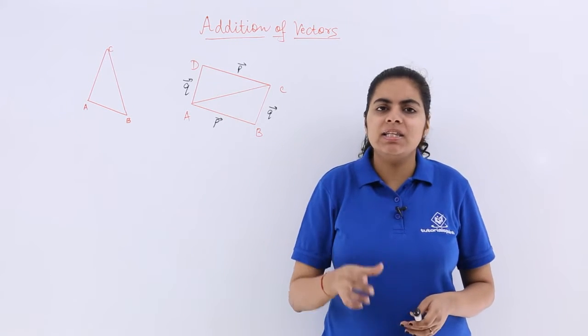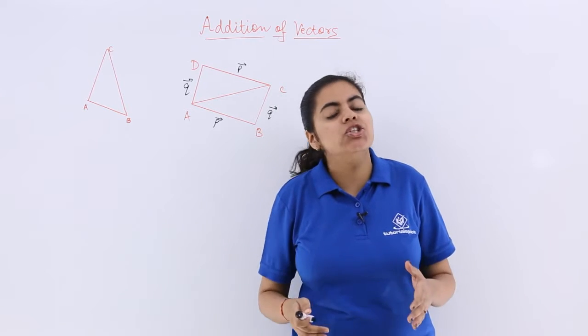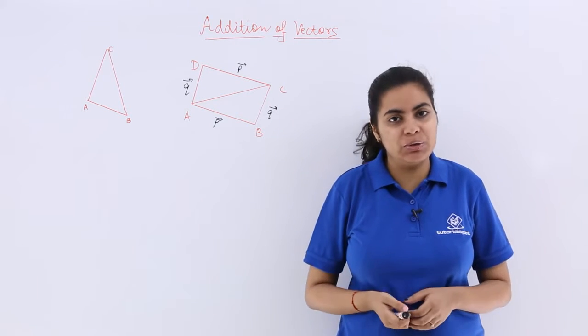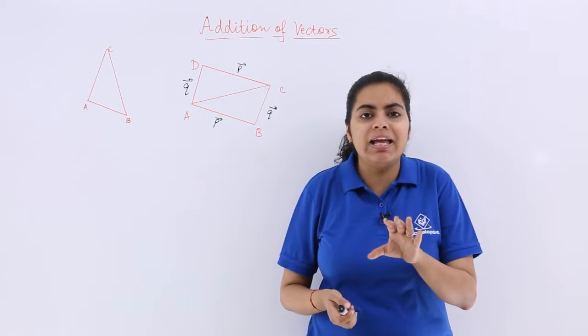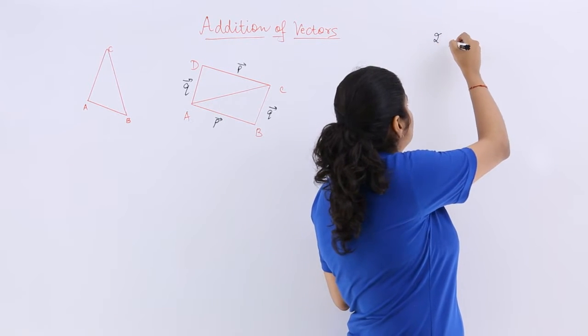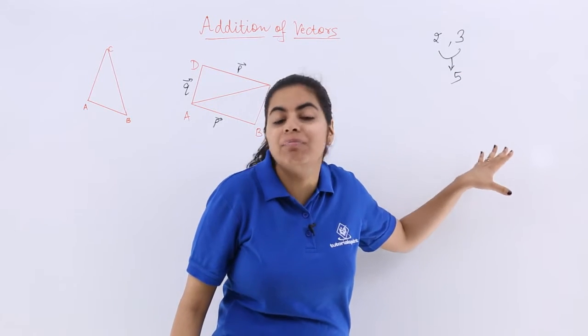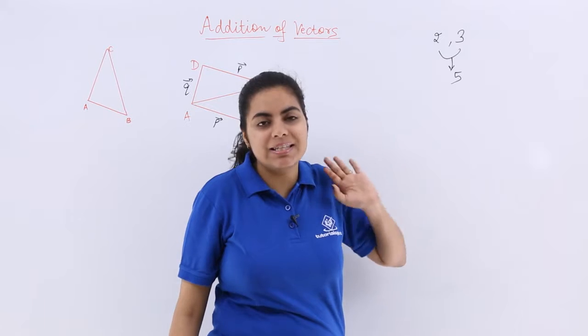Now when we know about vectors, let's move towards addition of vectors. Addition of vectors means you have to add two vectors, but it is not like you add in mathematics. If I ask you to add 2 and 3, you will give me the answer as 5 because 2 and 3 both have only magnitude, they are both scalars.